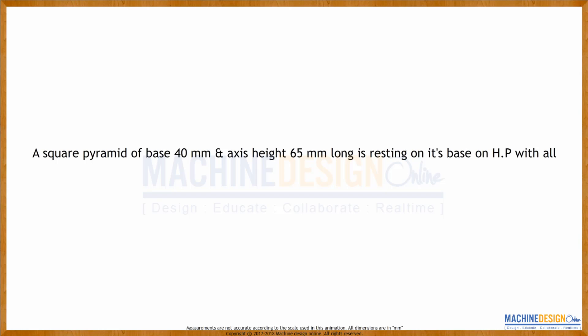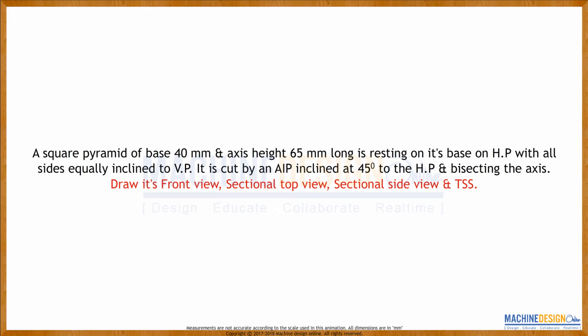A square pyramid of base 40 mm and axis height 65 mm long is resting on its base on HP with all sides equally inclined to VP. It is cut by an AIP inclined at 45 degrees to the horizontal plane and bisecting the axis. Draw its front view, sectional top view, sectional side view, and TSS.